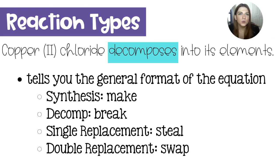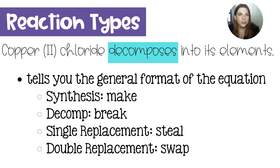There are a few things to look out for when you have word equations. A lot of the time you will get a reaction type in your word equation. So in this case, we have copper 2 chloride decomposes into its elements. So here we're getting the hint that we're going to break something apart — the copper 2 chloride is going to be broken apart.